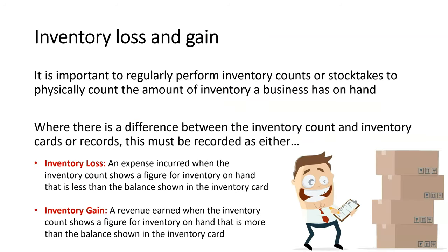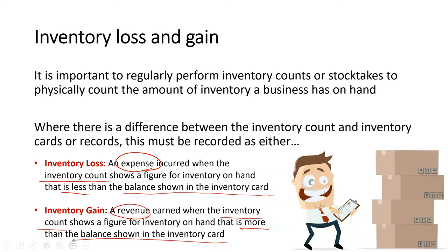So a quick recap. Inventory loss or gain is important to know about. The way in which we discover if we have an inventory loss or gain is by performing an inventory count, or stock take — this is where we physically count the amount of inventory on hand. We know there's an inventory loss or gain by comparing this count to our records. Where there is a difference, it's either an inventory loss or an inventory gain. Inventory loss is a form of expense where the inventory count is less than the balance in the inventory card — we have less inventory on hand than what our records show. An inventory gain, on the other hand, is a revenue, where our inventory count shows more than the balance shown in the inventory card.